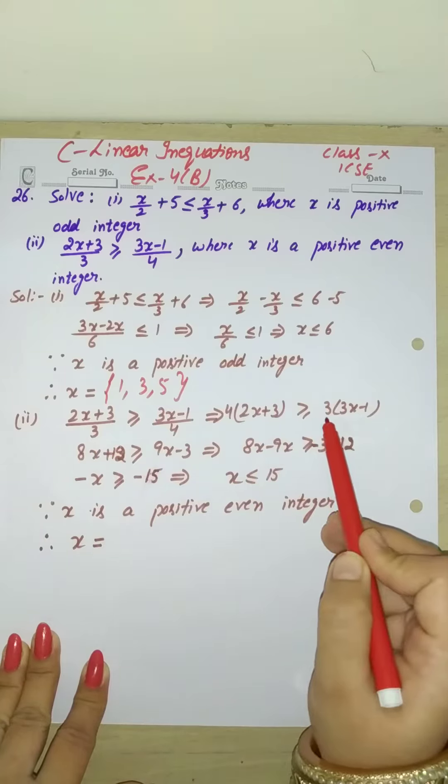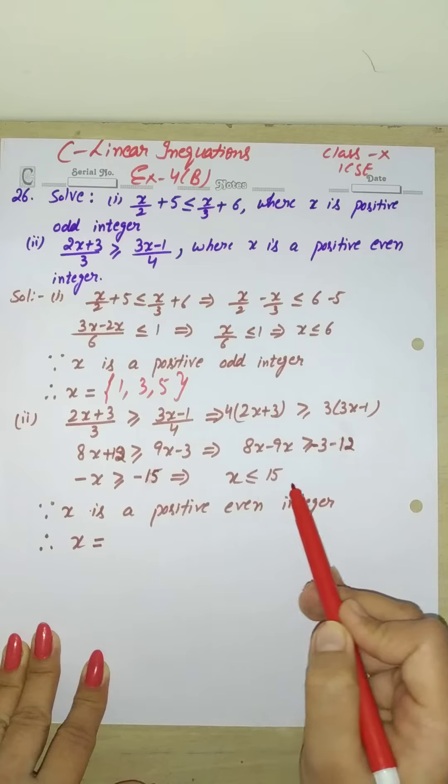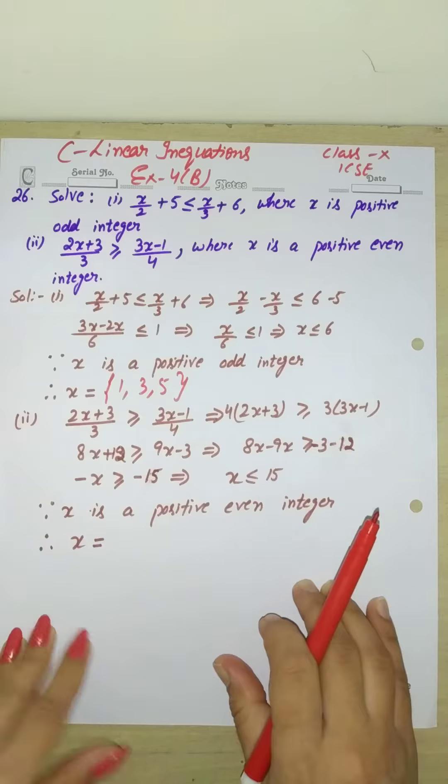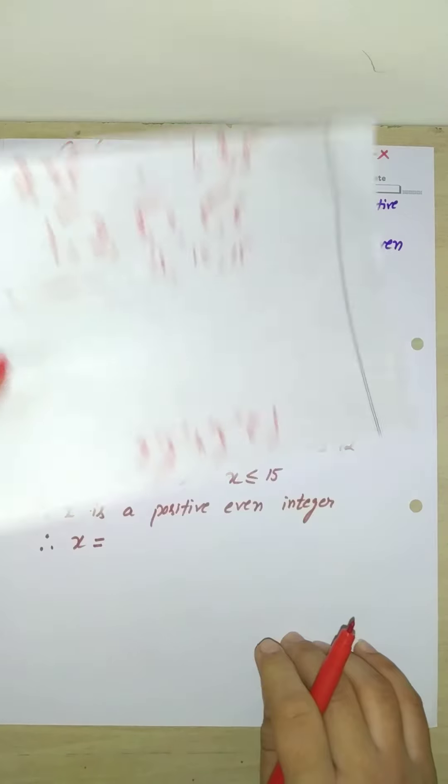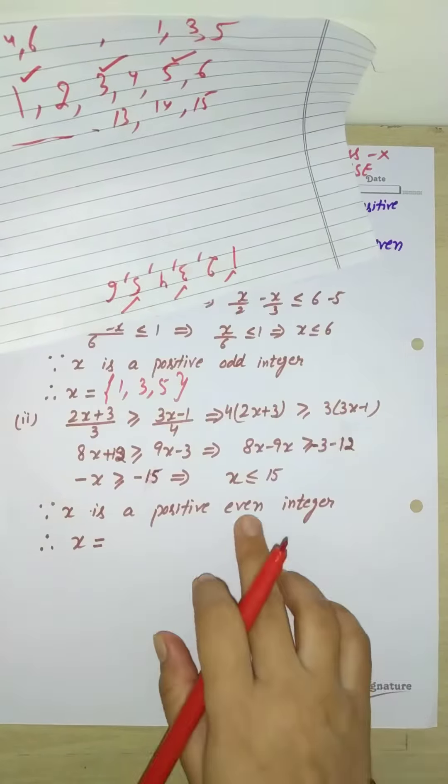Then, first you will get a value. Here, you will have a value of x is less than or equal to 15. Now, less than or equal to 15, which numbers are less than or equal to 15? So we have 15, 14, 13, all these numbers. But we need even integers.